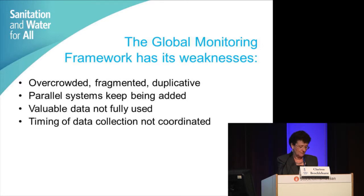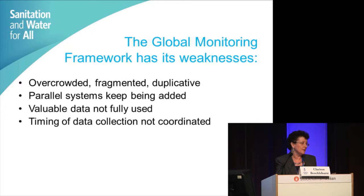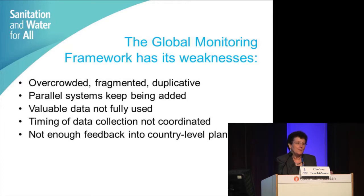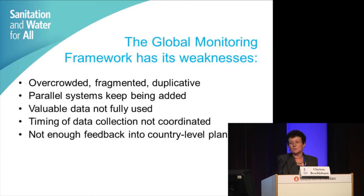The timing of data collection isn't particularly well coordinated. Big household surveys take place every three to five years, but we need to report every two years in the JMP. The CSOs take place maybe every five years, and the GLASS is put out every two years, yet we'd like a link between those. The big problem, already mentioned, is that we don't have enough feedback into country-level planning. Because in the end, we don't monitor for the sake of monitoring — we monitor because we want to know where resources ought to go, and that should feed into country-level planning and ultimately into implementation.